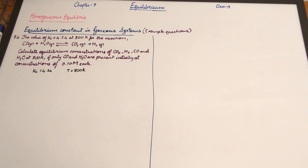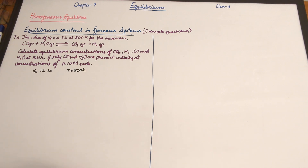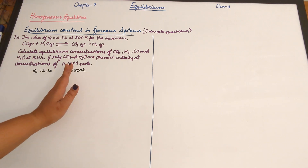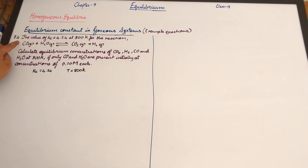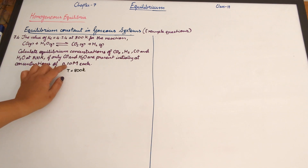Carbon monoxide plus water gives rise to carbon dioxide plus hydrogen. We need to calculate the equilibrium concentrations of carbon dioxide, hydrogen, carbon monoxide, and water at 800 Kelvin, if only carbon monoxide and water are present initially at a concentration of 0.10 molar each.